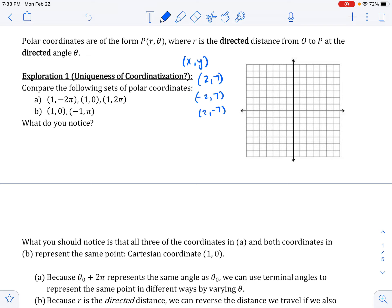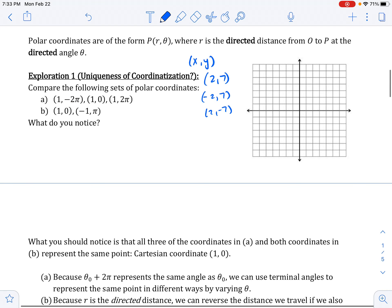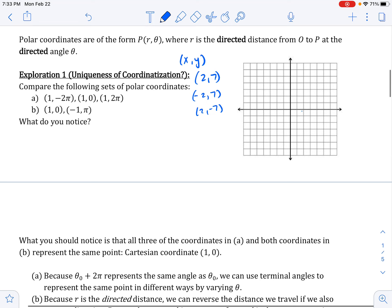So if we look at this first one, one, negative two pi, I like to look at the angle first. If the angle is negative two pi, that just means start here at zero, and then go negative two pi, so we're back here at zero. So that's the same as zero, and then we go one. And so that's just one unit this way. And so that's the first point.